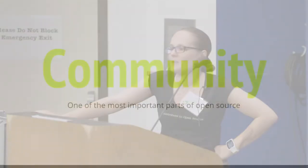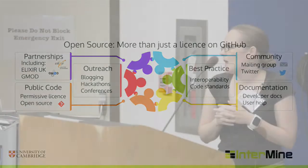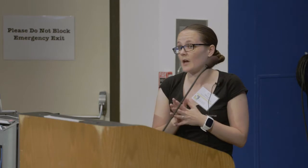The final bit I wanted to cover was community. Something I think is really important as part of open source is that it is not just code. Whilst code is part of what you do in open source, you've also got to think about who you're communicating with and how. It could be things like blogging and tweeting. Interacting with your community and making sure they know they're valued is a really important part of an open source project, as is following best practices and making sure you have good documentation and good channels to help and support your project.